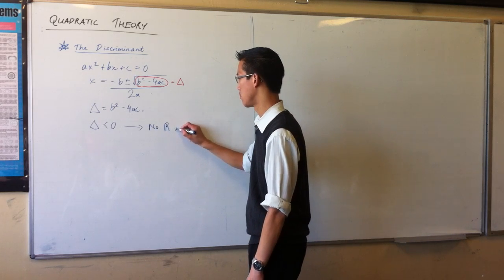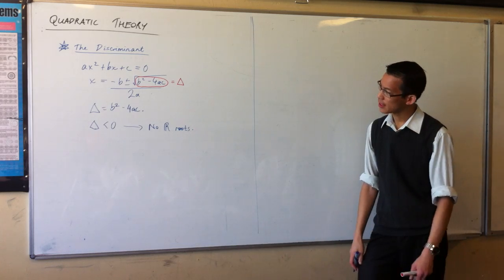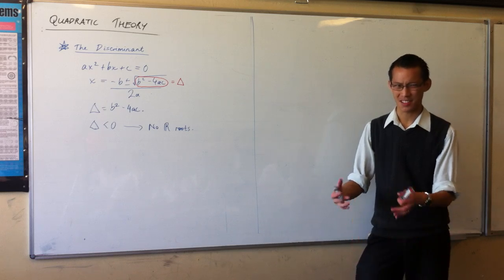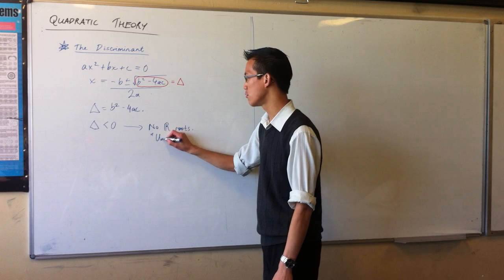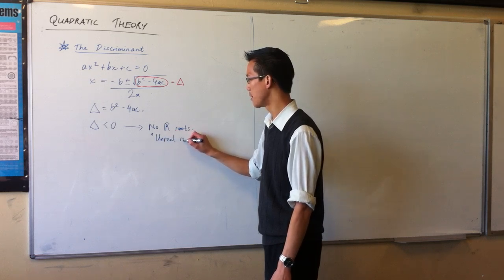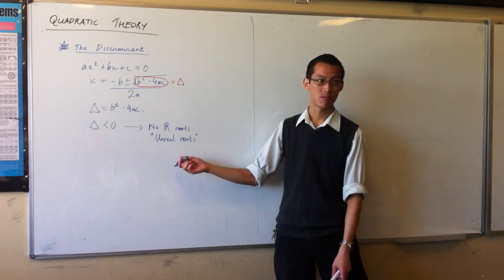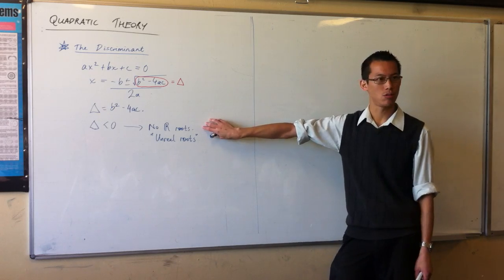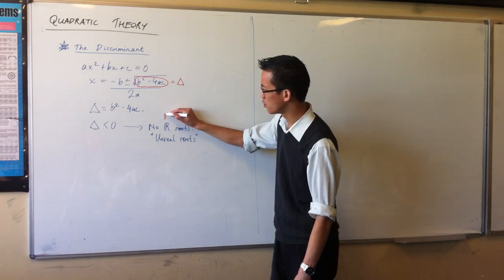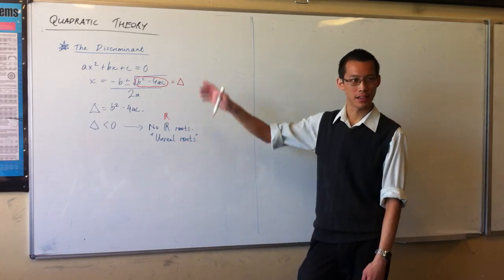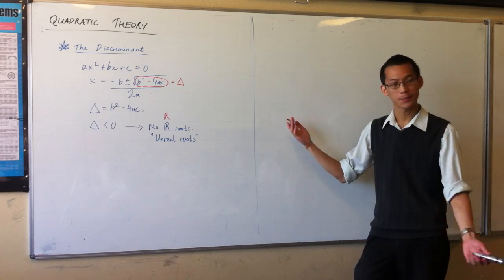No real roots. Sometimes you'll see it written, you know, it's sort of strange. They'll sometimes say that means you've got unreal roots because, strictly speaking, there are roots. It's just that they involve complex numbers, numbers that aren't real. But I think this is the more traditional way to say it. And if you've never seen that funny-looking R before, which has two lines along the vertical line, that's just the set notation symbol for real numbers.